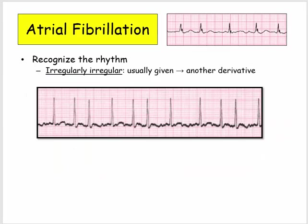First and foremost, you won't have to make a primary diagnosis of AFib on Step 1. They assume you can identify AFib and then proceed to ask you a set of derivative questions. Many times they will just describe the rhythm as irregularly irregular, but you are just as likely going to see a characteristic tracing, so you should be familiar with the rhythm tracings.